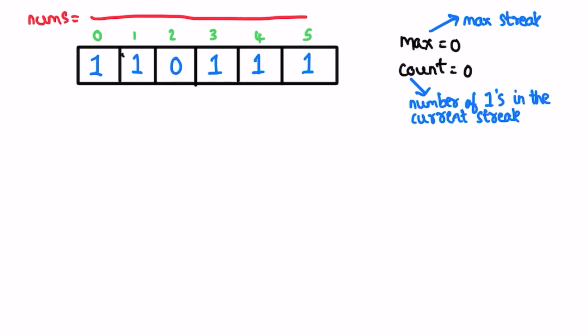We are going to iterate through the nums array from left to right and access each element at a time. Inside this for loop we are accessing one element at a time using a pointer i. If that element at i is one, we increment the count and compare it with the variable, storing the max of max and count inside this variable.